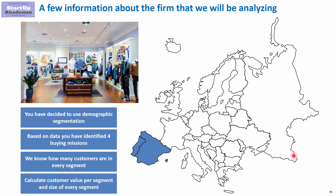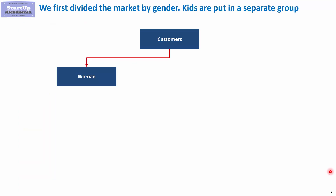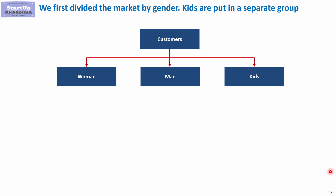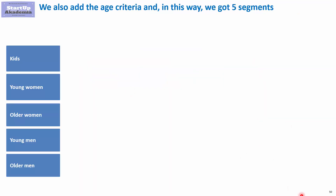We have identified three main segments: women, men, and kids. However, we have noticed that there will be differences in behavior when it comes to age. So in our segmentation, we will also add age brackets. We will have actually not three, but five segments: kids, young women, older women, young men, and older men.